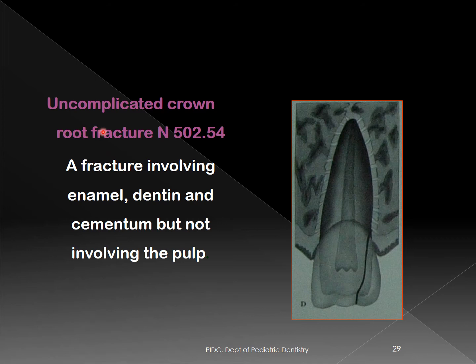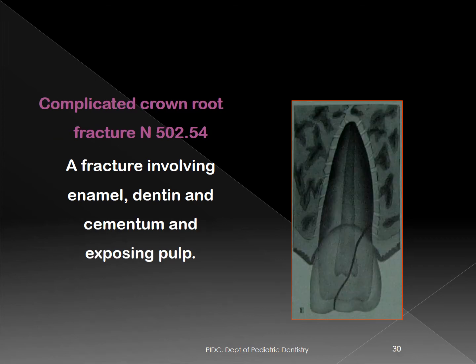We can also have uncomplicated crown and root fracture. When we talk about the crown, we mean enamel and dentine; when we talk about root, we include cementum. An uncomplicated crown and root fracture involves enamel, dentine, and part of the cementum without pulpal exposure. Similarly, a complicated crown and root fracture involves enamel, dentine, cementum, and pulp exposure.